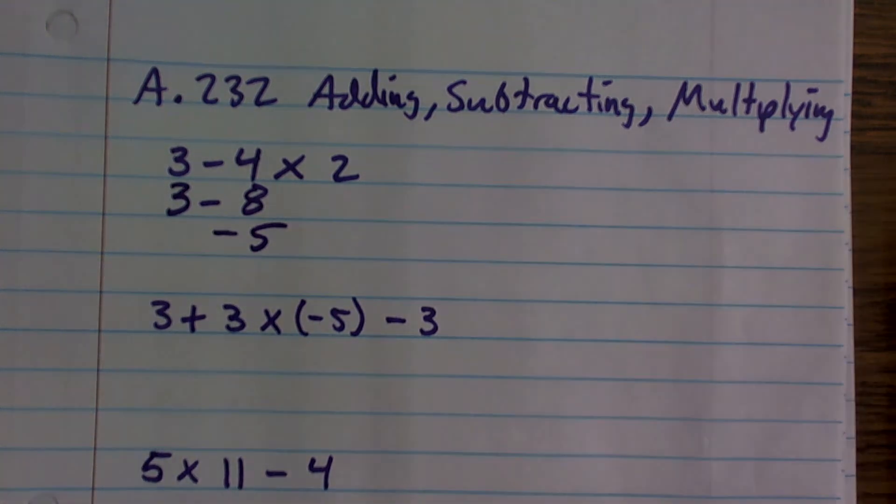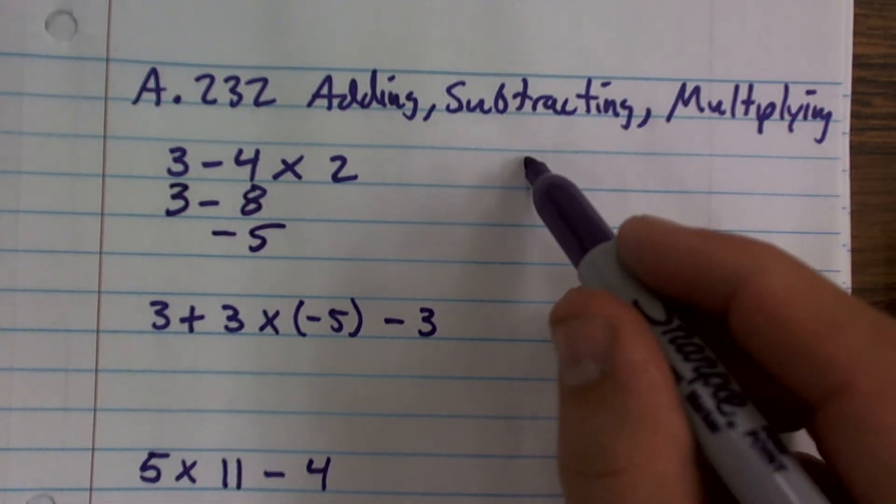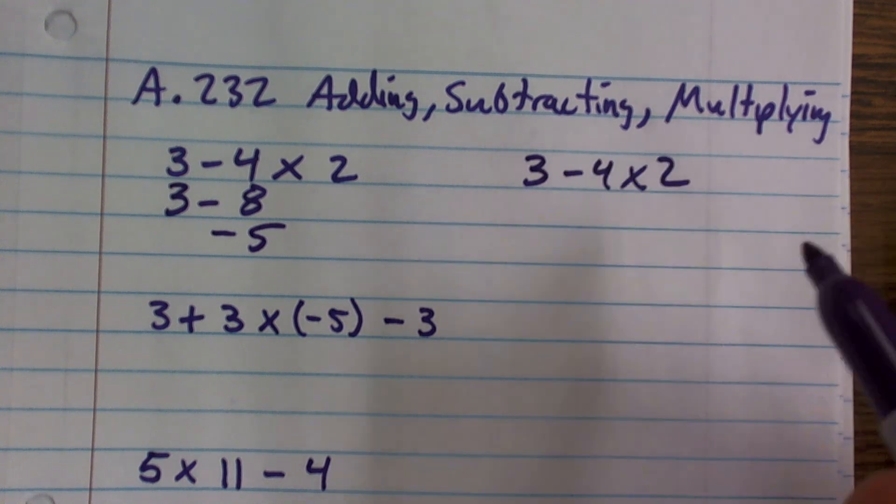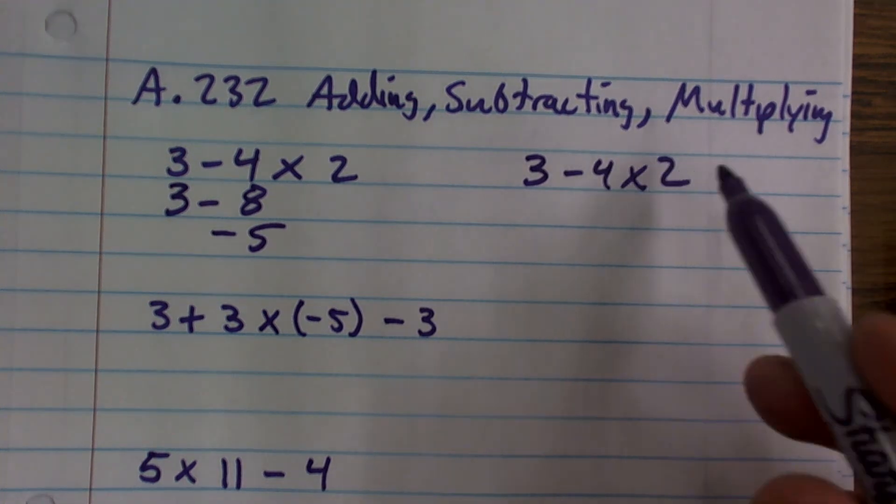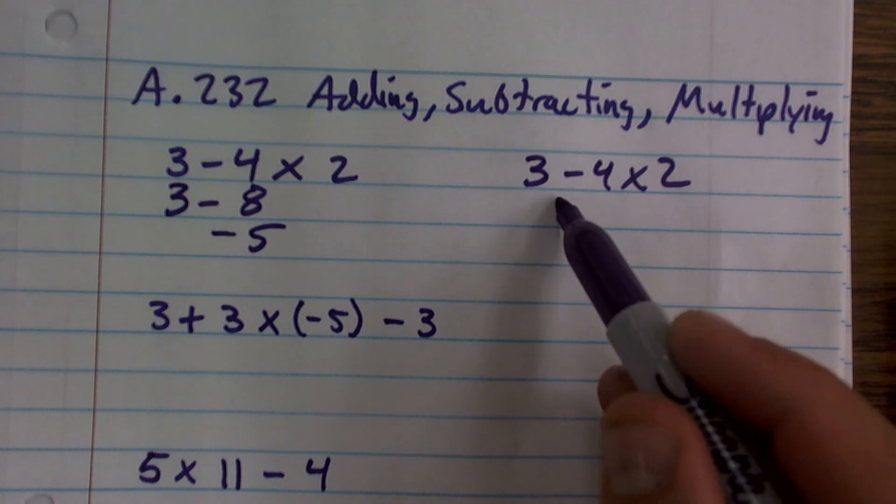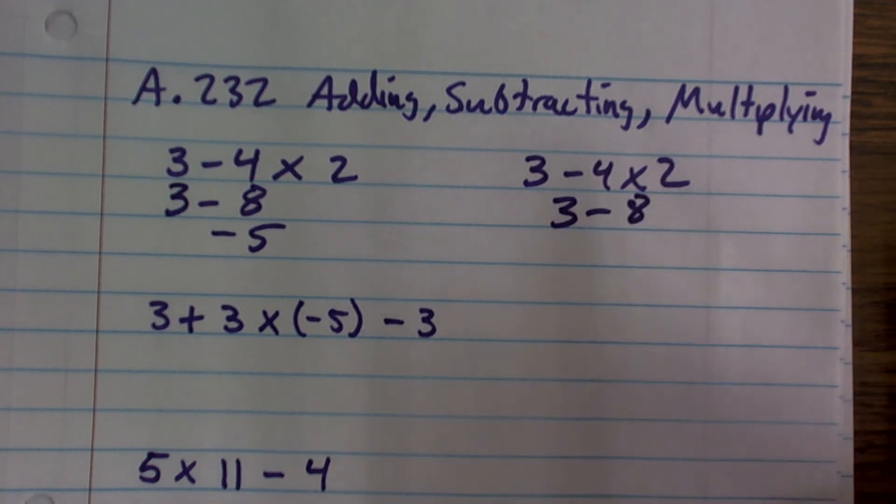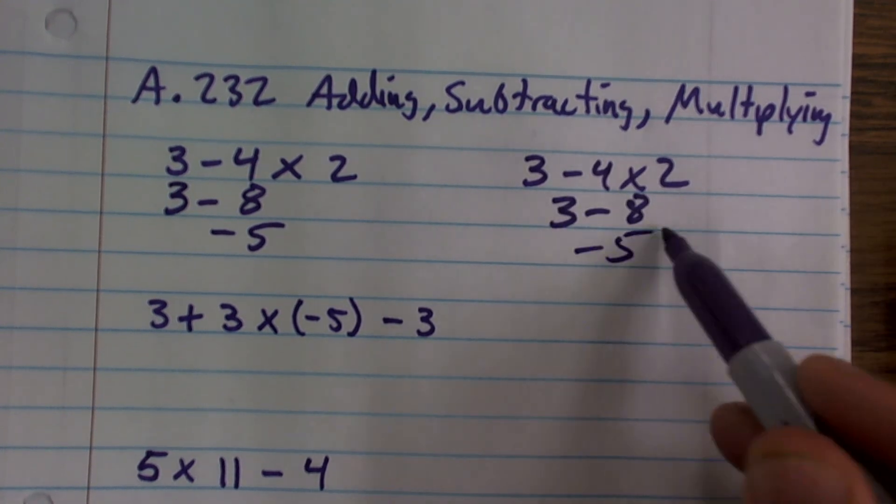The other way you could look at this - 3 minus 4 times 2, you could also say negative 4 times 2, which would be negative 8. So 3 minus 8, which still equals negative 5. I just wanted to clarify that.